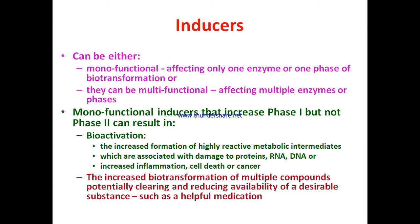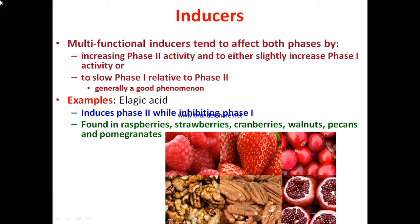In most cases, multifunctional inducers affect both phases — increasing phase two activity and either slightly increasing or slowing phase one relative to phase two. Slowing phase one relative to phase two is generally a good phenomenon, because phase one may convert xenobiotics into a more active and potentially more toxic metabolite. If phase one is slower and phase two is faster, as metabolic intermediates are produced they are quickly converted into non-toxic, water-soluble products and excreted without accumulating.